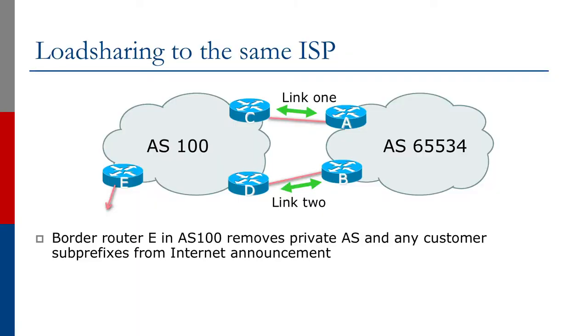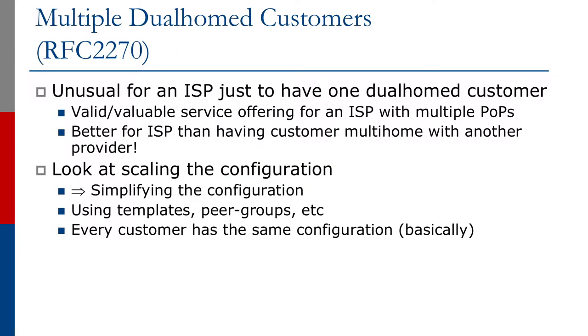The previous example showed how to connect a single customer to the upstream service provider network with two links. It's quite unusual for an ISP to just have one dual-homed customer. It's actually a valid and valuable service offering for an ISP with multiple points of presence to make this a proper service for lots of end-users. It's probably better for the ISP than having the customer multi-home with another provider, though when we talked about multi-homing as an introduction, we did discuss connecting to two different upstream providers. Network operators with multiple points of presence will often offer this as a service as well.